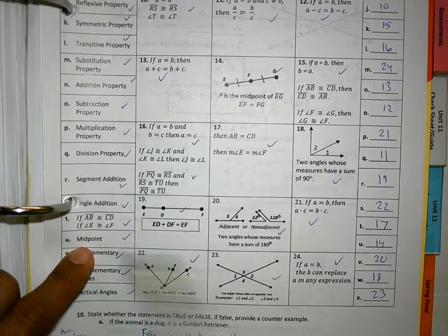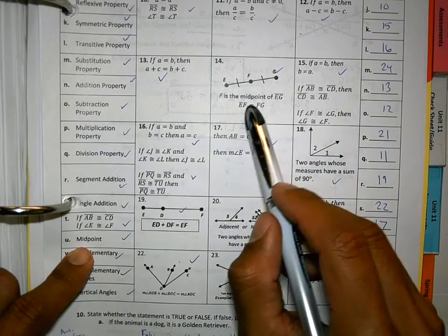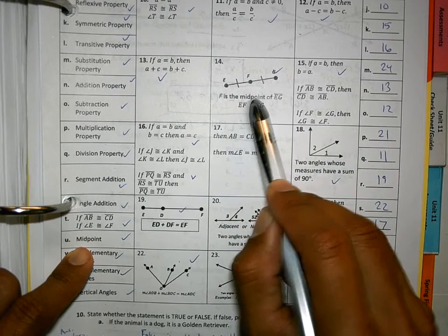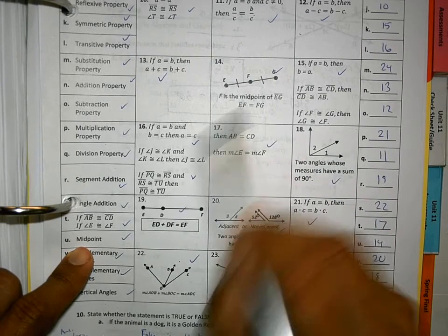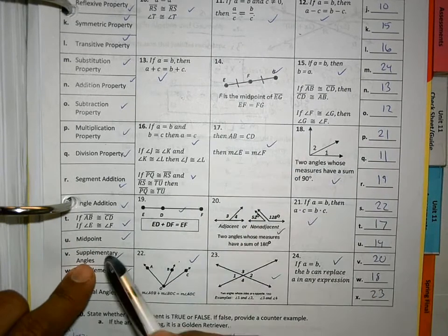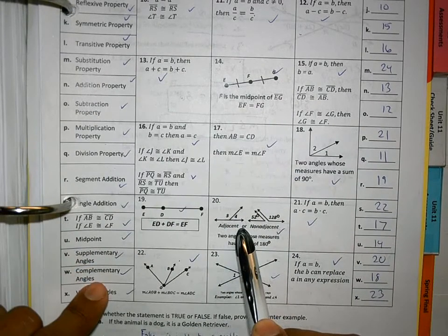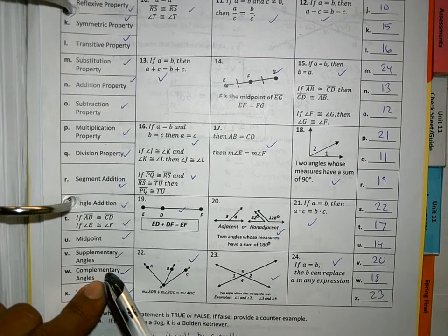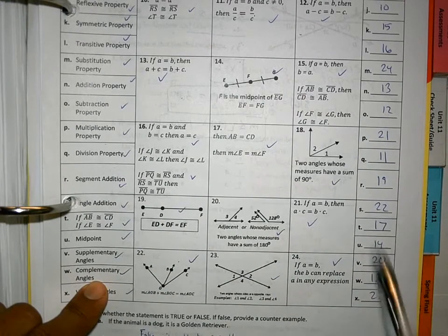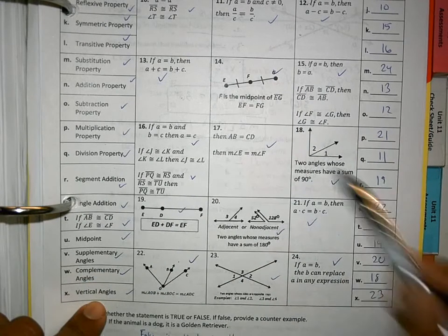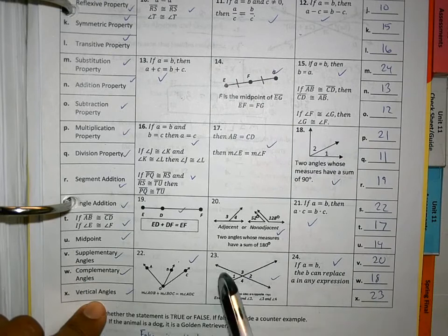Midpoint. U is number 14. The one that has the word midpoint in it. Keyword. Supplementary angles add to 180. I believe V is 20. It is. Complementary, as we talked about before, adds to 90. I believe that's 18. And vertical angles are the ones that are across from each other, which is 23.